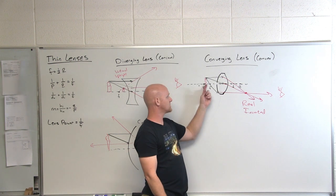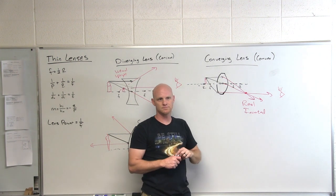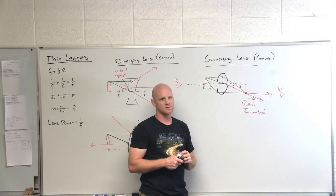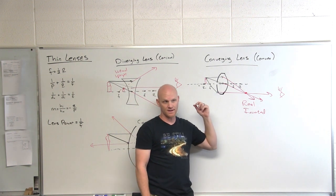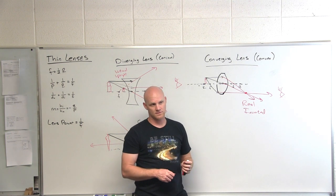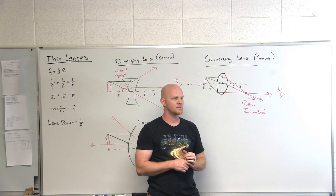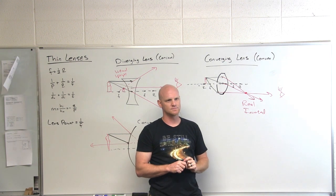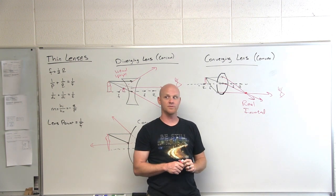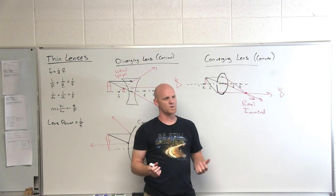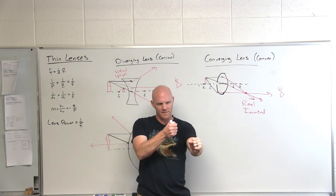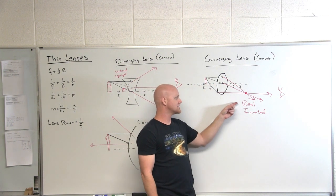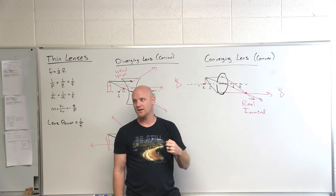On the focal distance you get that real, inverted image. But what would happen if we were within the focal distance? Virtual and upright. So when you're looking through a magnifying glass, you're using a converging lens. When you look at an object through a magnifying glass, does it look upside down or right side up? It looks right side up, which means you have to put that magnifying glass pretty close to the object — the object is closer than the focal distance.